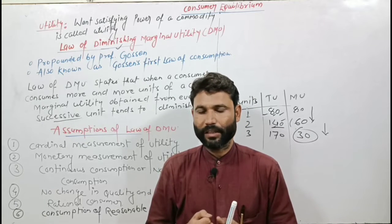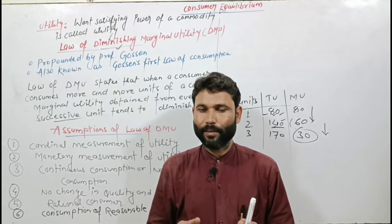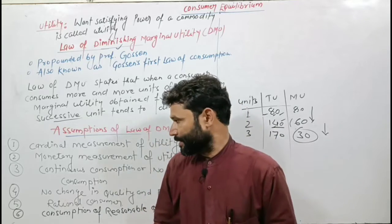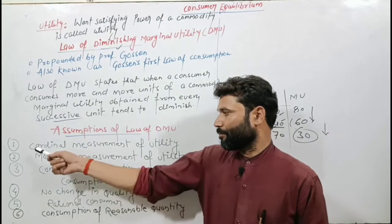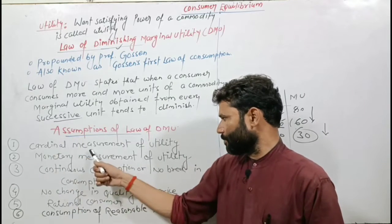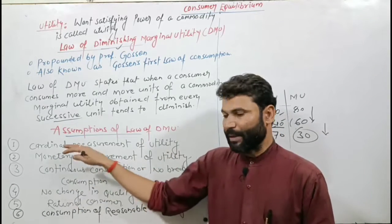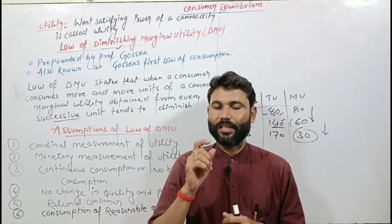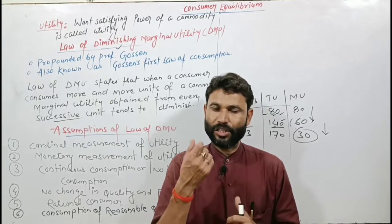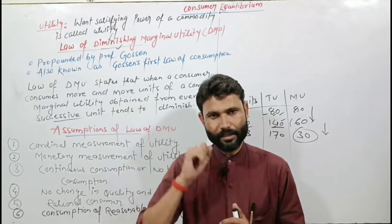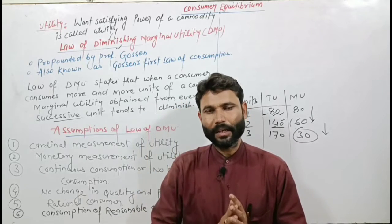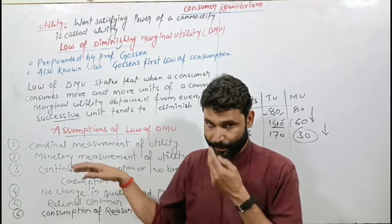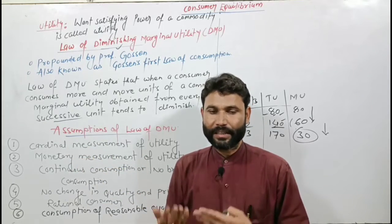For this law to work, certain conditions must hold. First: cardinal measurement of utility — we assume that utility can be measured in cardinal numbers, just like calories. When we consume anything, we can measure how many utils of satisfaction we actually get.